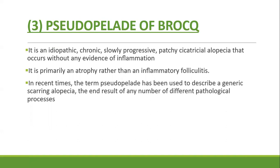The third condition is pseudopelade of Brocq — an idiopathic, chronic, slowly progressive, patchy cicatricial alopecia that occurs without any evidence of inflammation. It is primarily atrophic rather than inflammatory folliculitis. In recent times, pseudopelade has been used to describe the generic end result of a number of different pathological processes, rather than a distinct entity without preceding inflammation.